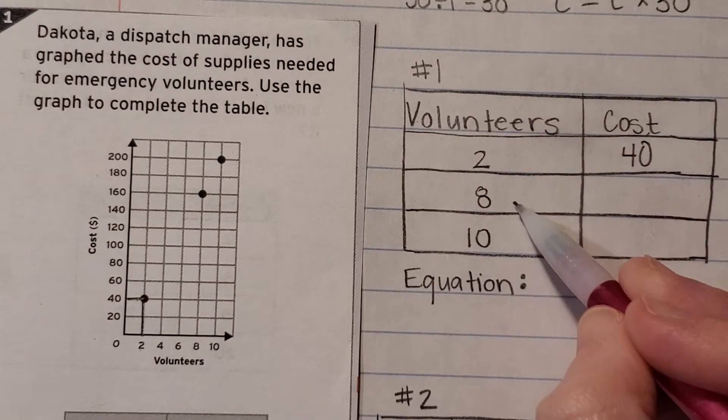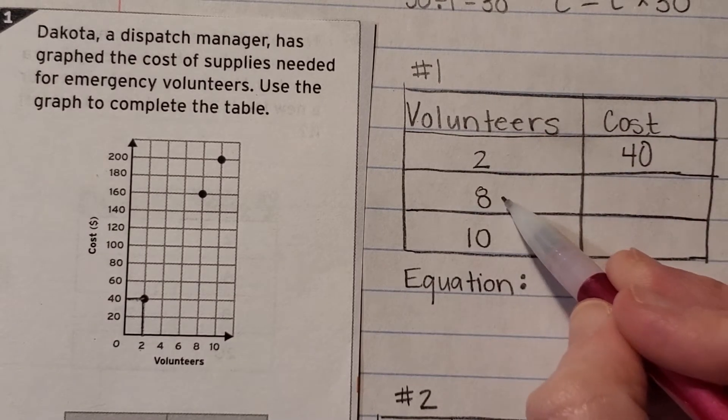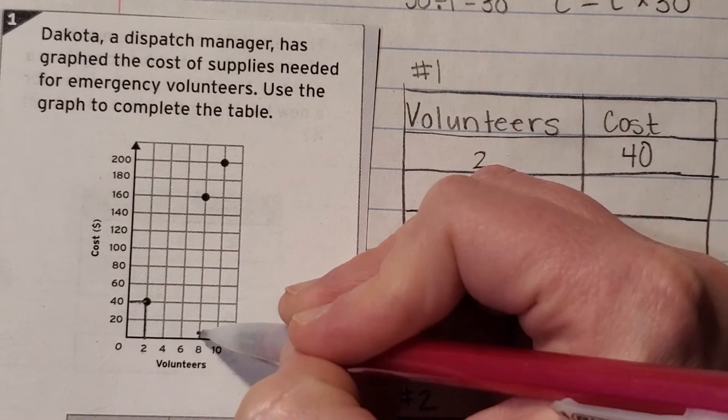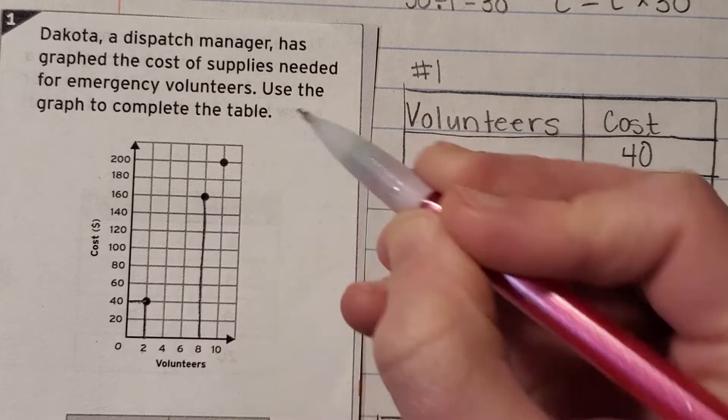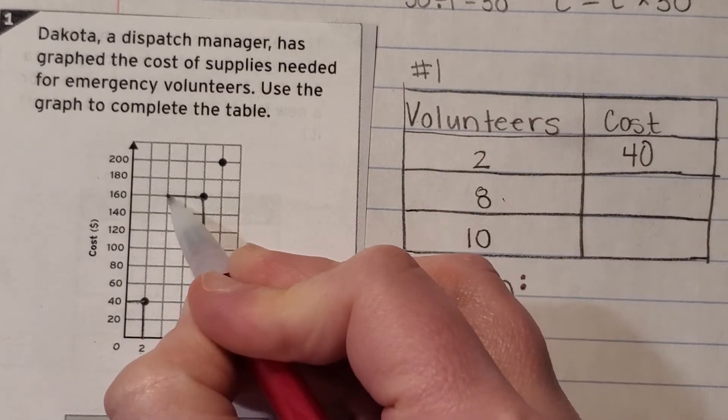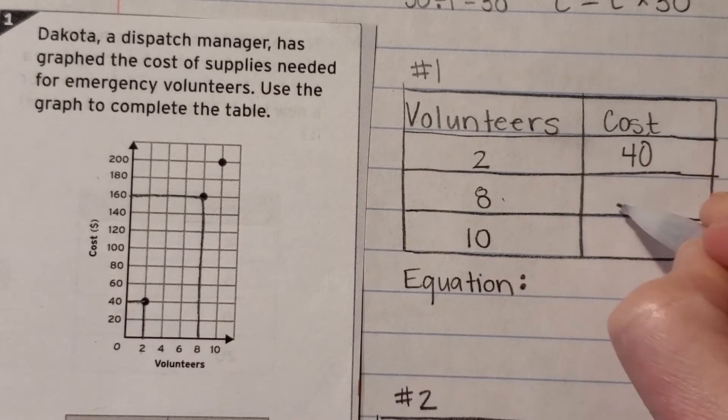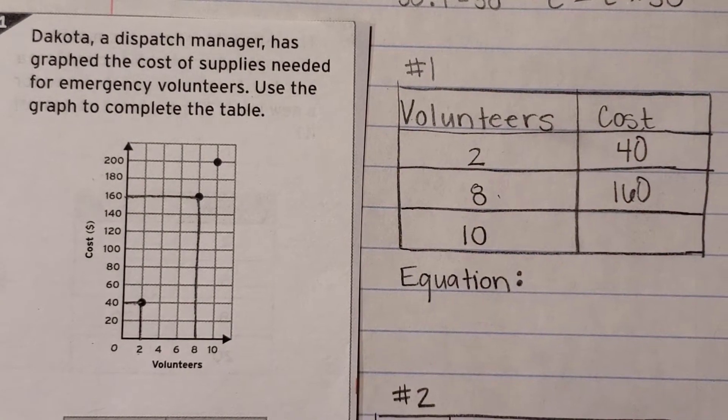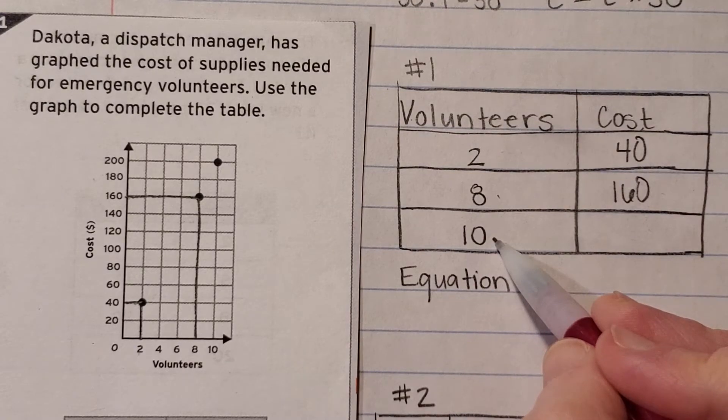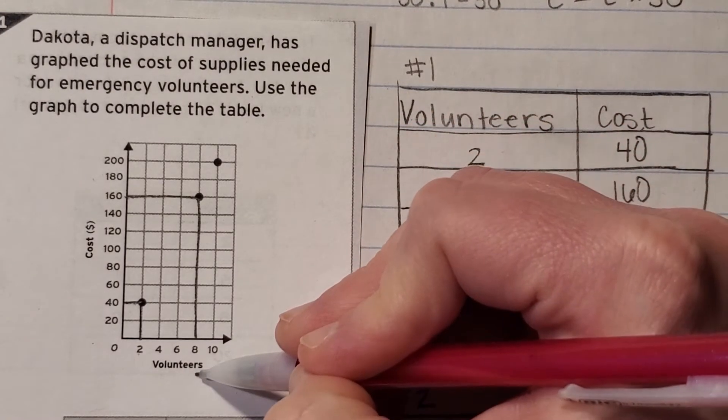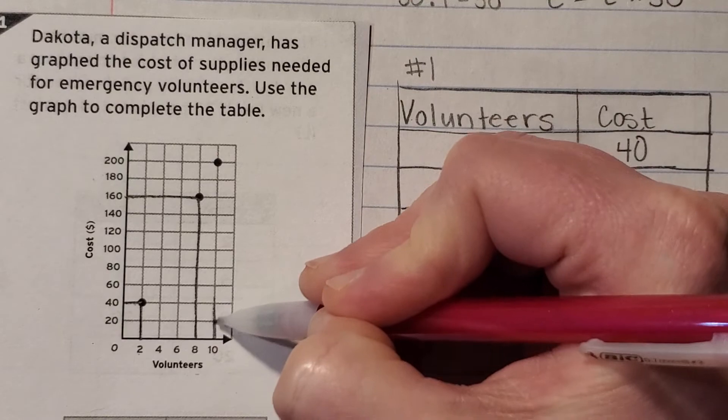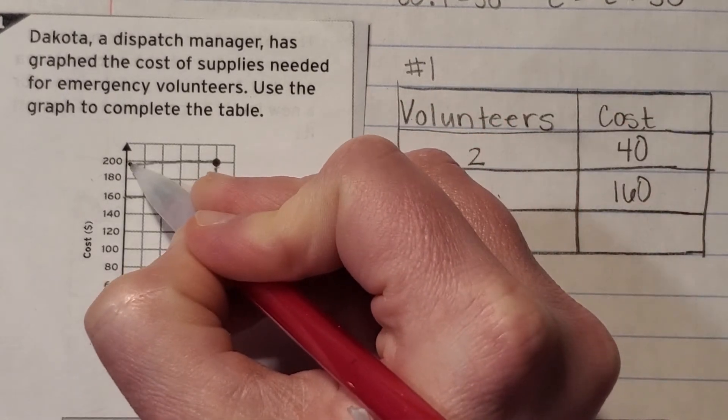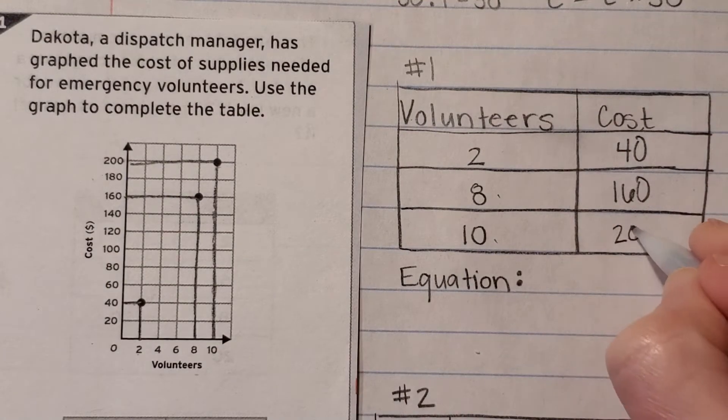The next amount of volunteers I'm going to look at is eight. Let's find where eight volunteers is, go straight up until we reach a data point and straight over and we end up with a cost of one hundred sixty dollars. Our last number of volunteers we're going to look at is ten. Find your ten volunteers, go straight up and straight over and we end up with a cost of two hundred.